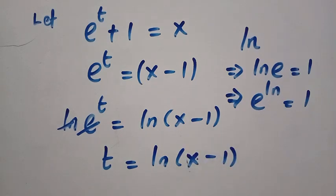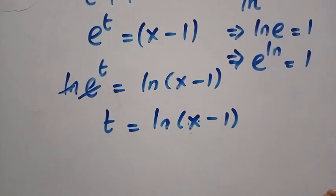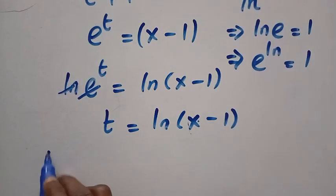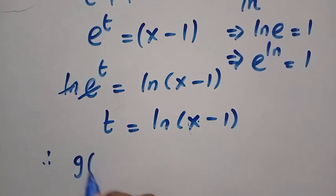Then, let's come back to the given question and try and replace everything. Therefore, we have g of, instead of e^t plus 1, we change that one to x, because we have let it be equal to x.